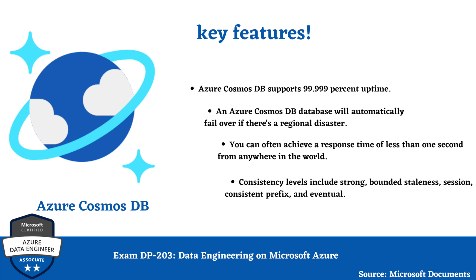Key features of Azure Cosmos DB include 99.999% uptime. You can invoke a regional failover by using programming or the Azure portal, and Azure Cosmos DB will automatically failover if there is a regional disaster. By using multi-master replication, you can often achieve a response time of less than one second from anywhere in the world, and it is guaranteed to achieve response times of less than 10 milliseconds for reads and writes. To maintain data consistency, your engineering team should introduce consistency levels including strong, bounded staleness, session, consistent prefix, and eventual.